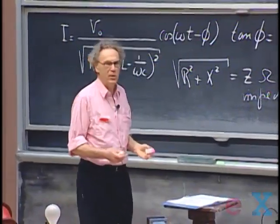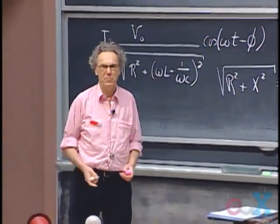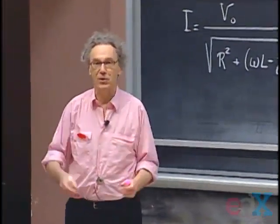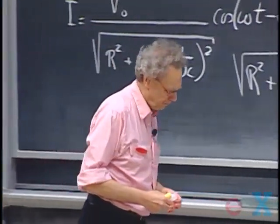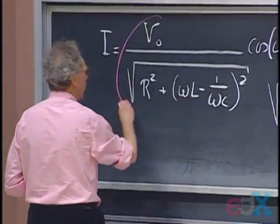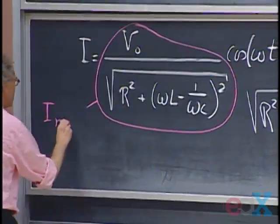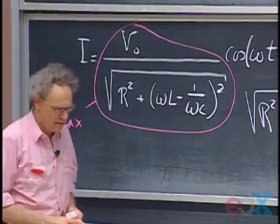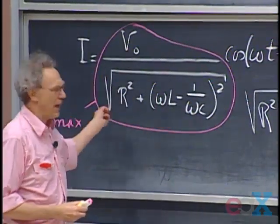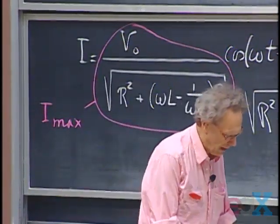You may ask: does that mean there's current before I switch the instrument on? Of course not — that's the transient solution. When you switch something on, this steady-state solution doesn't hold yet. The value of I_max — what is in front of the cosine term — is a function of ω itself, as well as of R, L, and C.